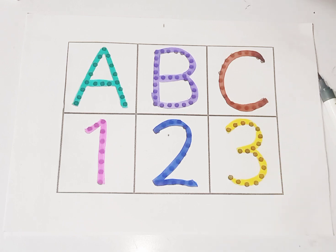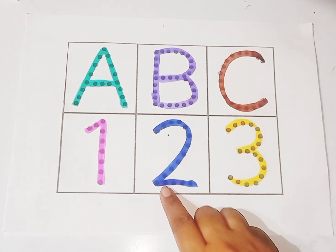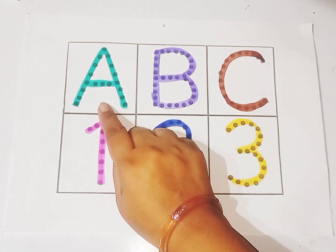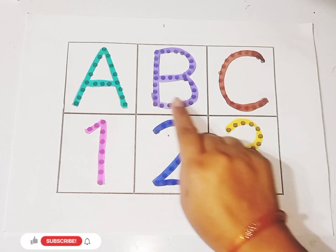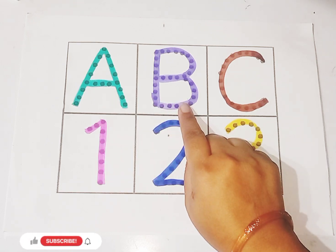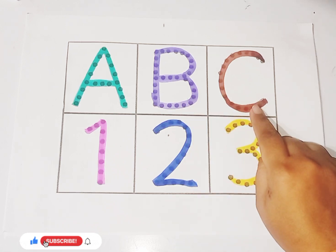So kids, today we learned alphabets and numbers. Let's revise again. Letter A — A for apple, sound O. Letter B — B for banana, sound B. Letter C — C for cat, sound K.